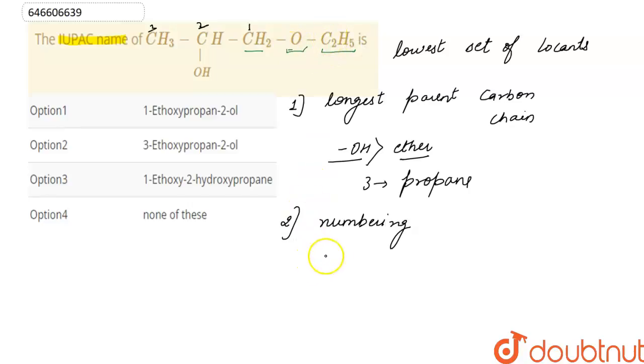So the name here is - as prefix used for ether is oxy and ethyl group is present, so ethoxy. And there are total three carbon atoms, so propane.